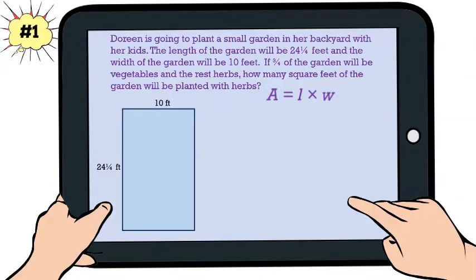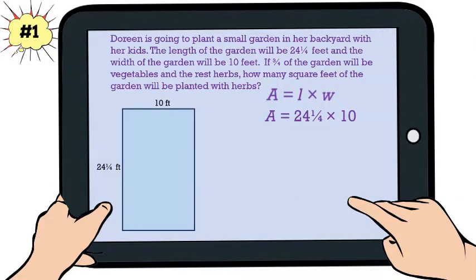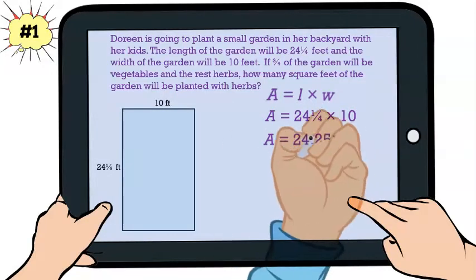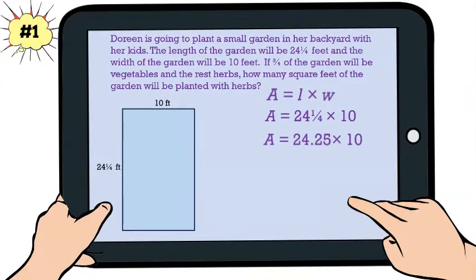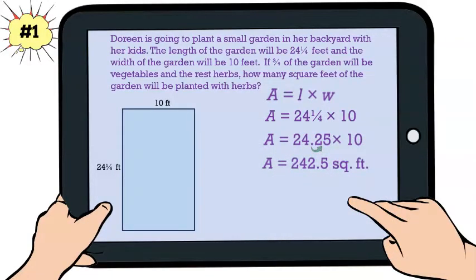Next, we need to substitute in our numbers for length and width. Since one fourth is point 25, I'm going to rewrite this mixed number as a decimal. I know that to multiply a whole number or decimal by 10, I simply move the decimal point one place to the right. So the area of my garden is 242 and five tenths square feet.